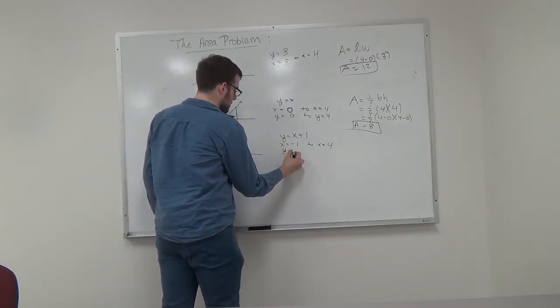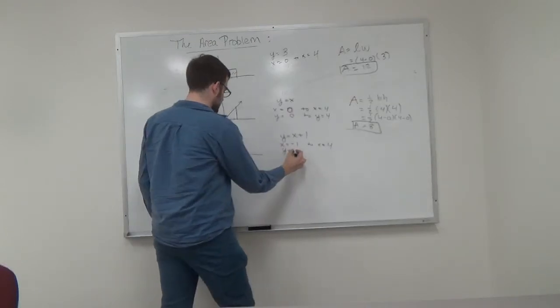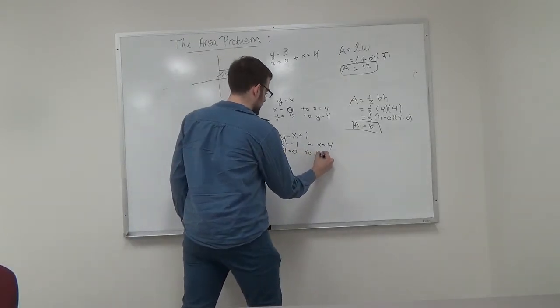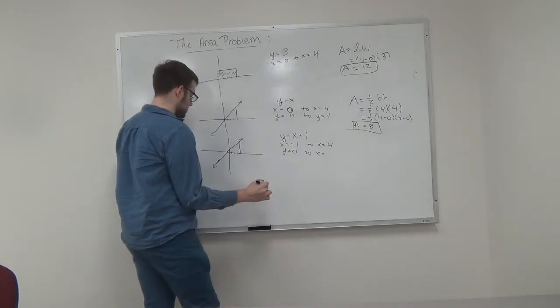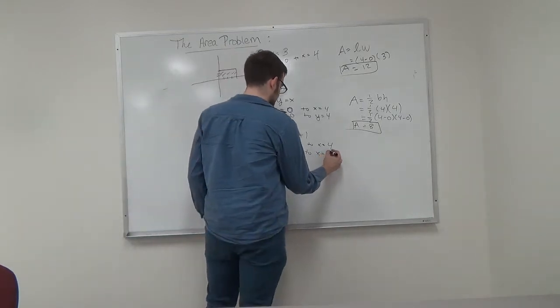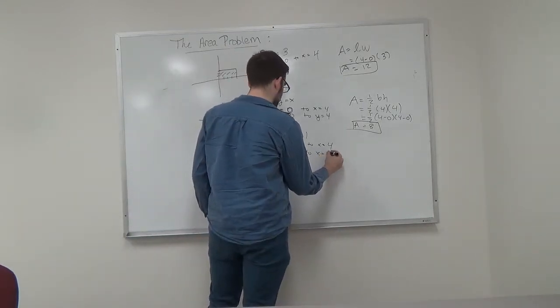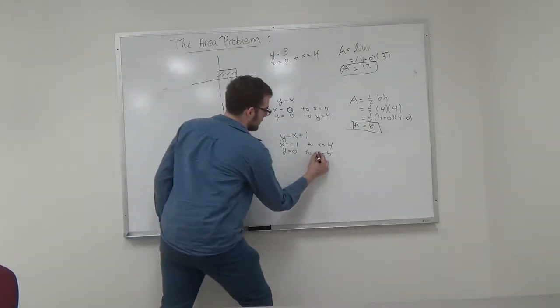We're going to go from y is equal to 0 to x is equal to 5, 2, y is equal to 5.